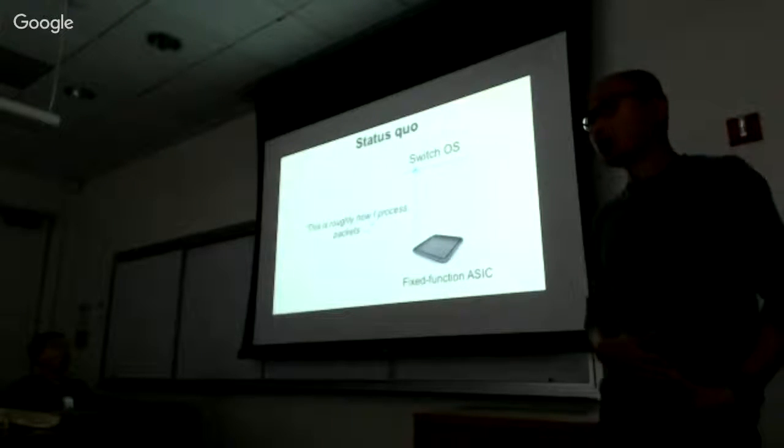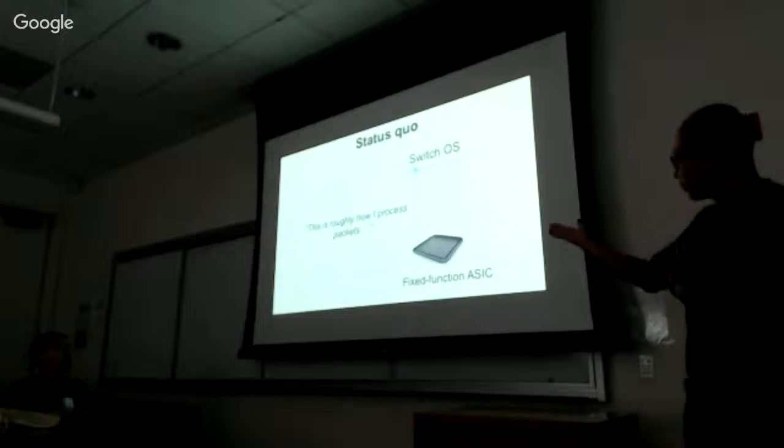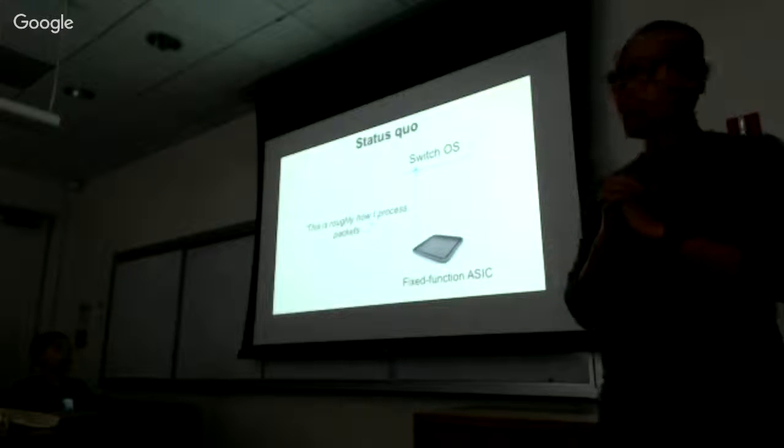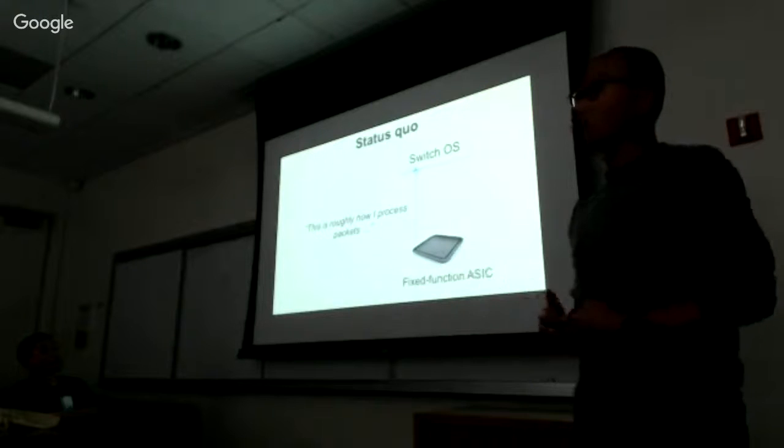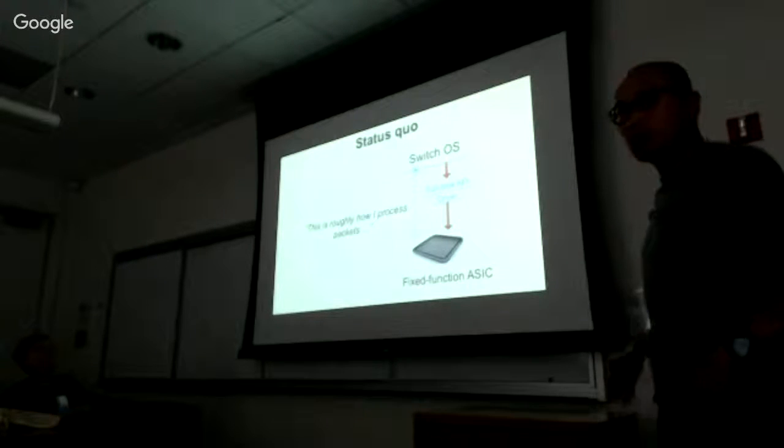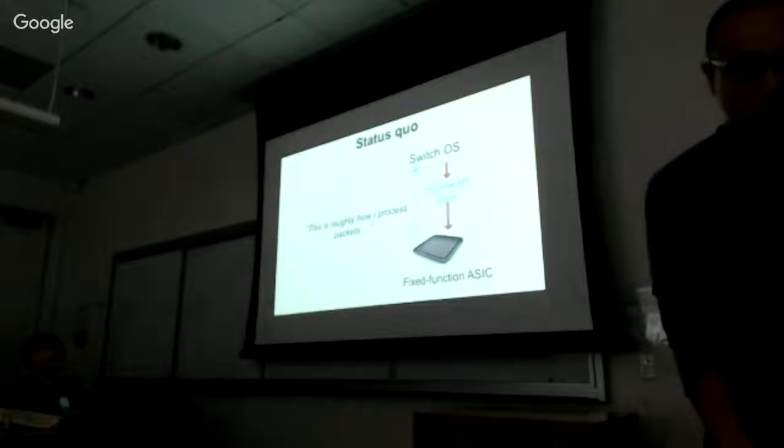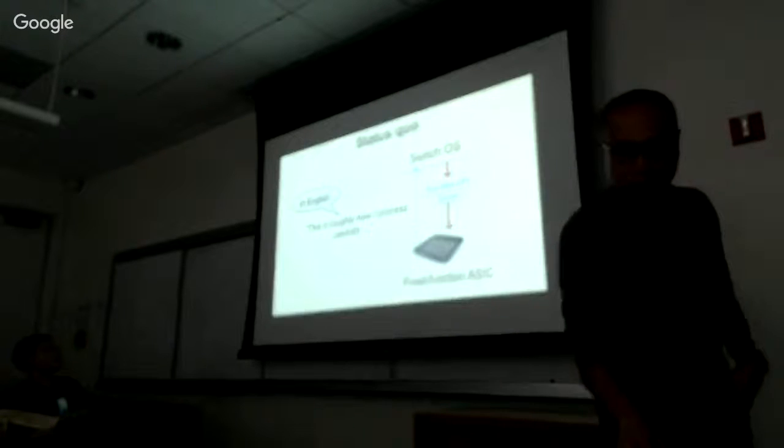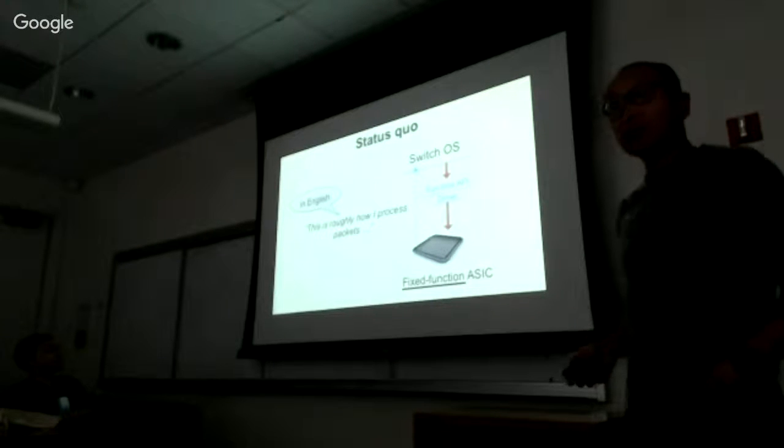Imagine that you're building a networking system today. You may have some choices - merchant silicon, or if you're working for some large system company, you may have some in-house silicon developed by your engineers. But either way, it's fixed function ASIC. If you're the software team of this networking system group, you have to figure out roughly how this fixed function ASIC actually works, what kind of functions it has, what kind of APIs to call to enable these functions. That's the common way of building a system.